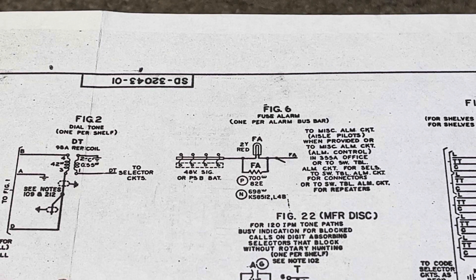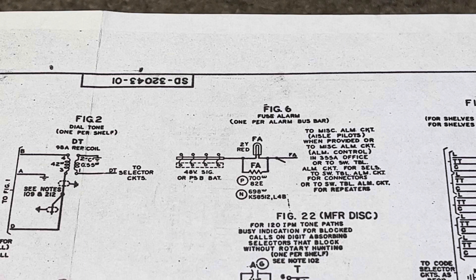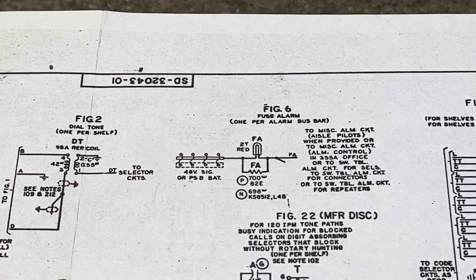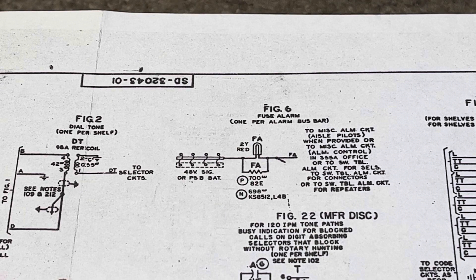In this case, FA — which again stands for fuse alarm — would have a red cap on it, making it a major or critical type of alarm. In step-by-step offices, you would have an RLS, which stands for release, which would be for line finders, selectors, or connectors.